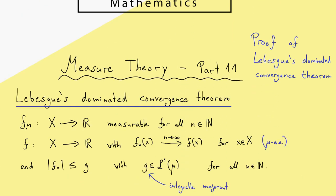Here you see all the assumptions we need for Lebesgue's dominated convergence theorem. On the one hand we have a sequence of measurable maps and also the pointwise limit function which we will call just f. On the other hand we have another function g which is integrable. This function g is indeed the important ingredient in the whole theorem — it should lie above all the functions fn, and therefore we call it an integrable majorant.